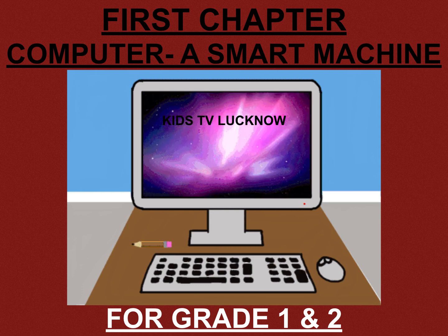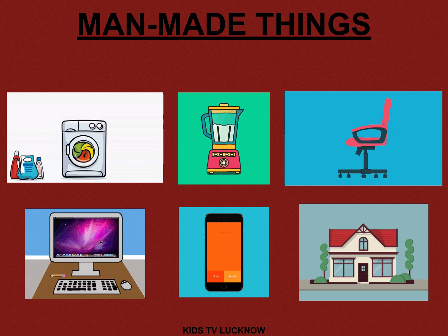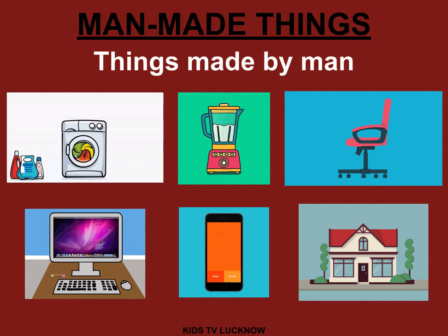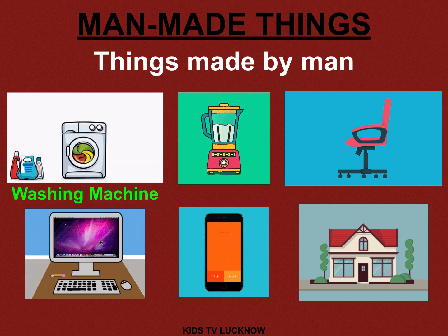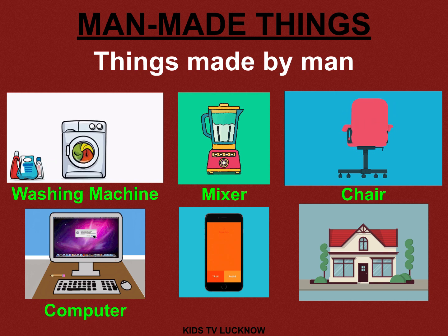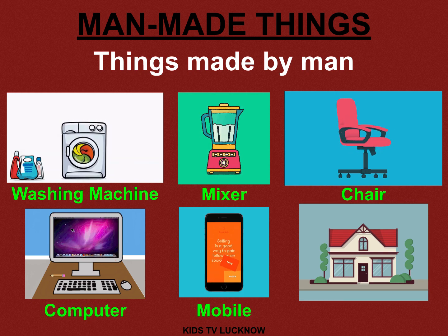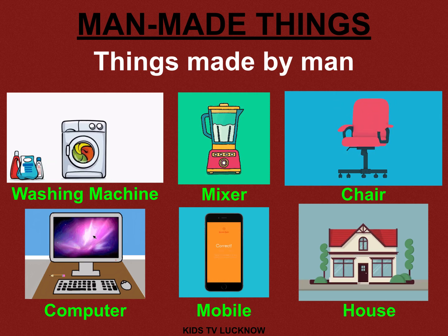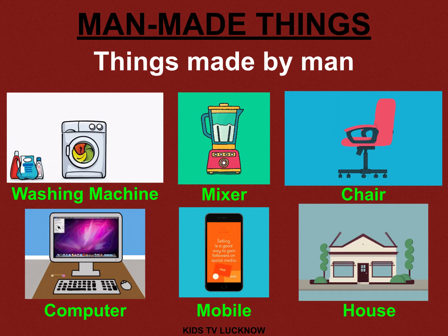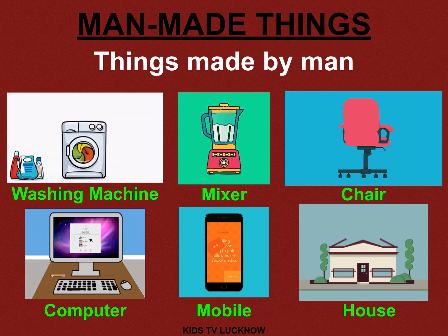Before learning about computers, let us see what are man-made things. Things made by man are called man-made things. As you can see the pictures here, there are so many things made by man: washing machine, mixer, chair, computer, mobile, and house. All these things are made by man for their comfort.